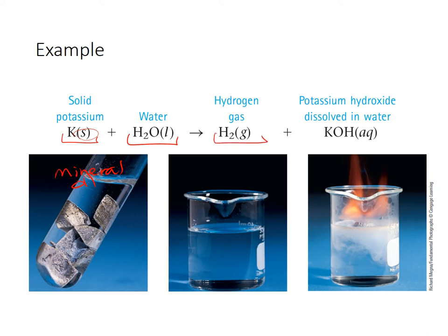So again, looking at the solid for potassium. How do I know that? Periodic table tells me. Liquid water - we assume water is a liquid unless indicated otherwise. H2, hydrogen gas, diatomic, because hydrogen is by itself. Potassium hydroxide: potassium is one plus, hydroxide is one minus. So my formula is KOH. And the dissolved in water gives me the aqueous.